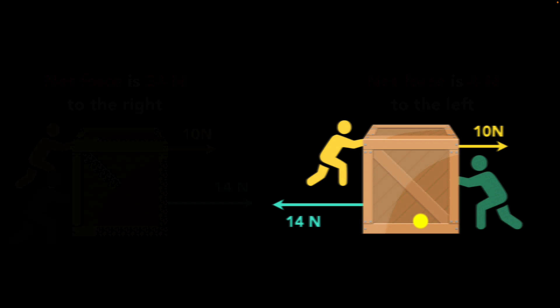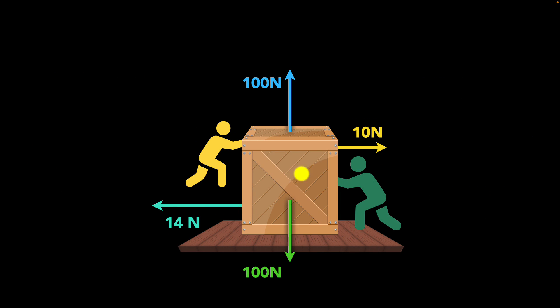Finally, what if along with the horizontal forces, we also had some vertical forces? Now what do we do? Well, now we look at the horizontal and vertical separately. So for example, in the horizontal, we already know the net force is 4 newtons to the left. And now we look at vertical separately.